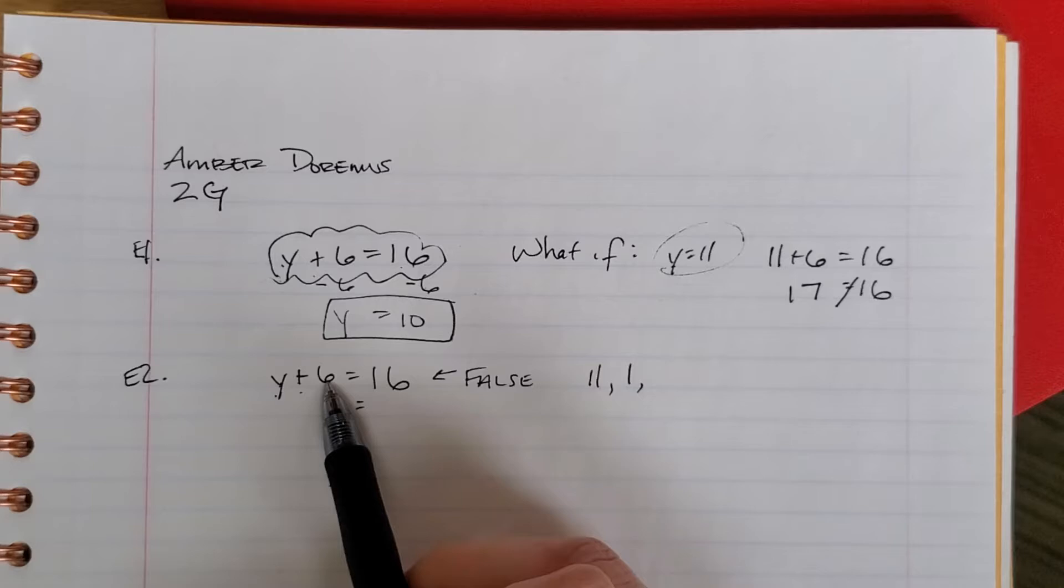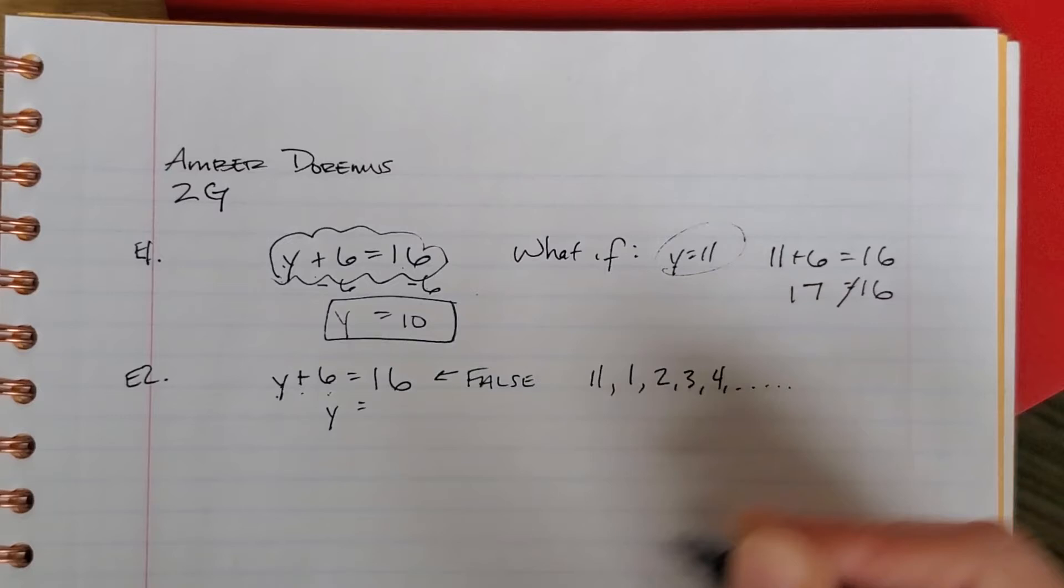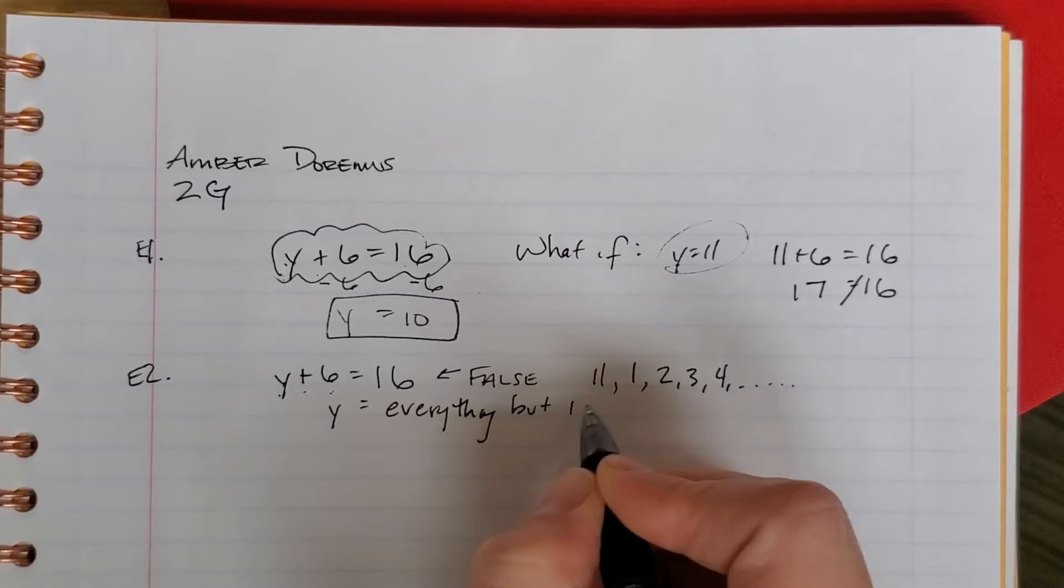How about 2? 2 plus 6 is 8. 8 doesn't equal it. 3, 4, dot dot dot. Turns out everything but 10 will make it false.